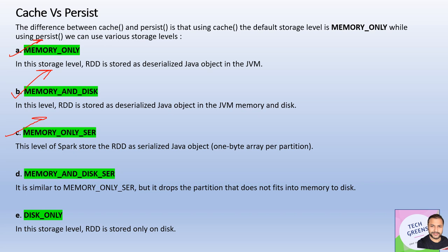The third storage level is MEMORY_ONLY_SER, where 'SER' means serialized. In the previous two cases, the object was stored as deserialized, meaning the size of the object would be comparatively bigger. When serialized, the data is more compact. Like MEMORY_ONLY, if data doesn't fit in memory those partitions will be recalculated when an action is called. The fourth is MEMORY_AND_DISK_SER — same as MEMORY_AND_DISK but the object is stored in serialized form, giving you the benefit of memory saving since serialized objects are more compact than deserialized ones.